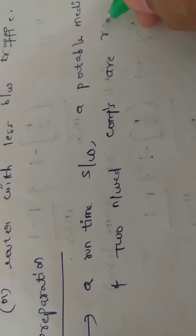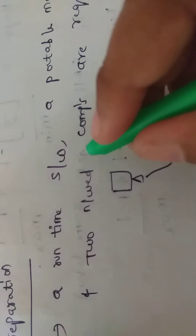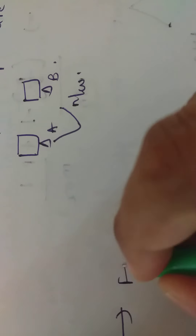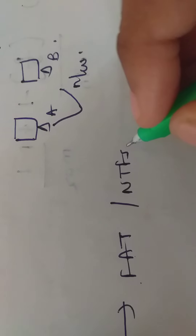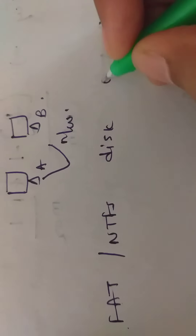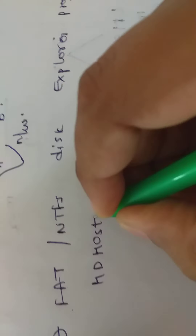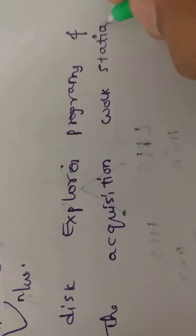Two networked computers are required — Computer A and Computer B — both must have network connectivity. After successful installation of the File Allocation Table (FAT) and NTFS Disk Explorer programs, and HD Host on the action workstation.